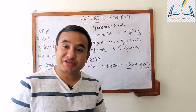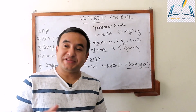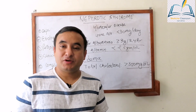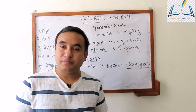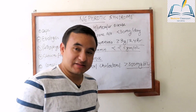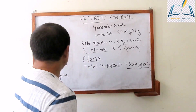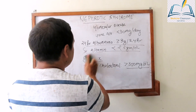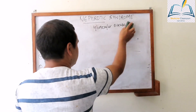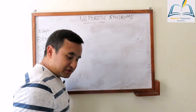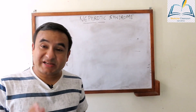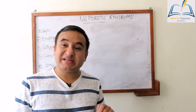We see nephrotic syndrome in all ages — in children, in adults, and in elderly people. The cause may differ by age group, but we see this condition in all age groups. So, what are the etiologies of this condition? It can be a primary cause or a secondary cause. In the primary cause, there is a primary problem in the glomerulus. In the secondary cause, the primary problem lies in a systemic body part, and only the effect of that disease occurs in the glomerulus.